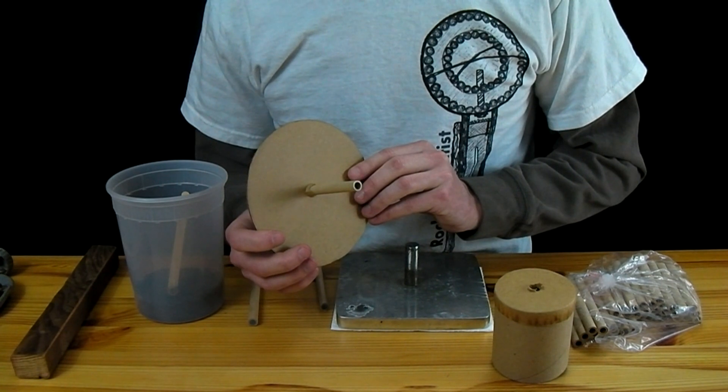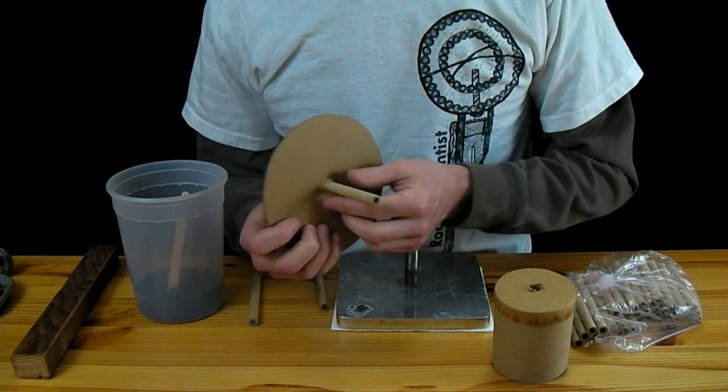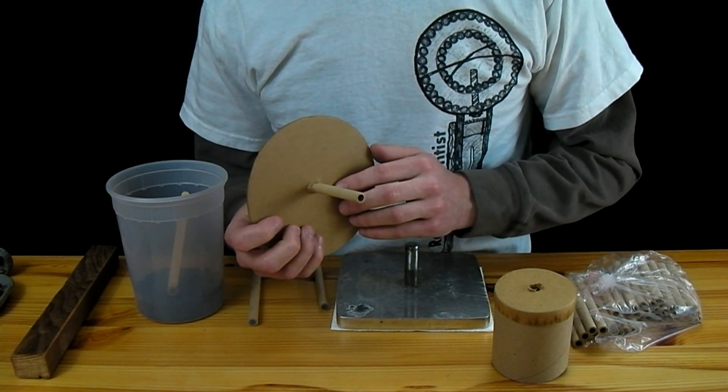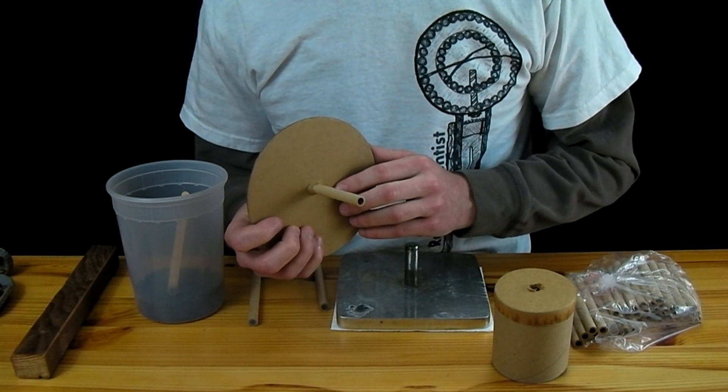To finish off these spolets you can fill the empty portion of the tube with black match. This will provide a quick match type effect which will give an even harder kick to your shells.